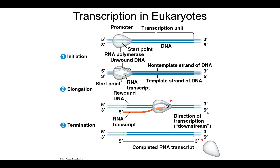Transcription occurs in eukaryotes in three phases. Initiation is where RNA polymerase recognizes the promoter, separates the two strands, and begins to read the template strand. Elongation is where RNA polymerase moves along the template strand, reading and writing continuously. Finally, termination occurs when it reaches the polyadenylation signal sequence, falls off, and we have our completed RNA transcript.